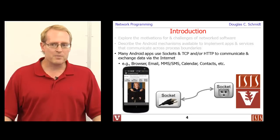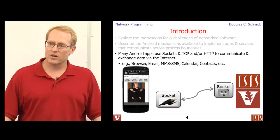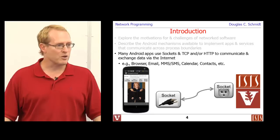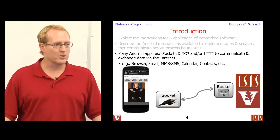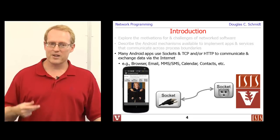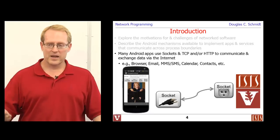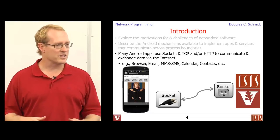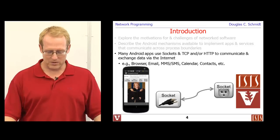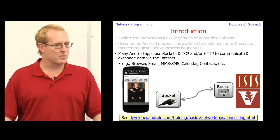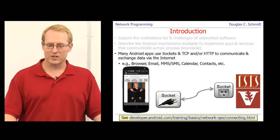Most Android apps that communicate off the device tend to use TCP IP and or HTTP, which are some protocols at different layers of abstraction that can be used to exchange messages and download data. And there's all kinds of applications on the phone that use this. So your browser uses this. Email, calendar, contacts, MMS, SMS. All these things use these kinds of mechanisms under the hood to communicate back and forth in various ways. And there's lots of discussions about how you can learn more about that if you take a look here.